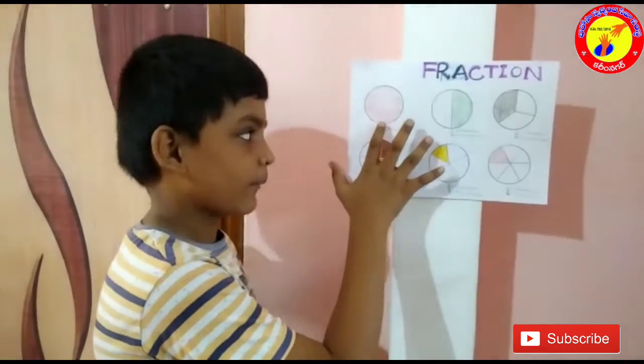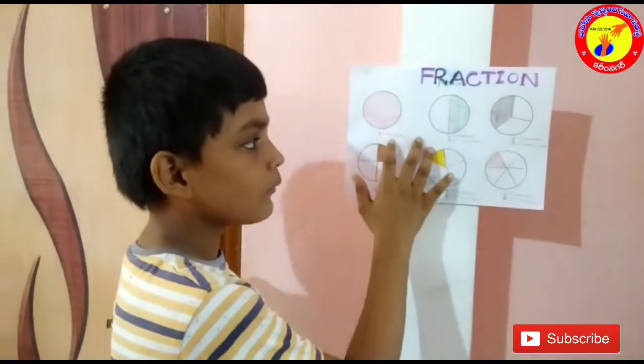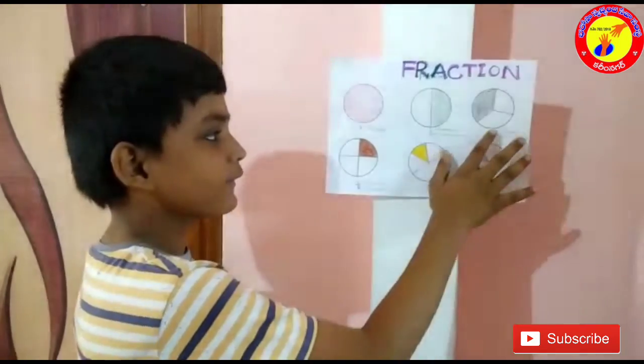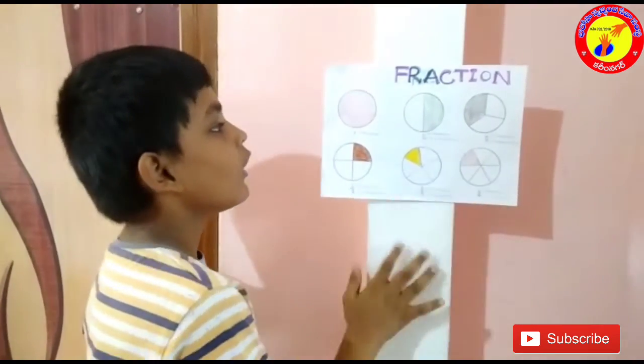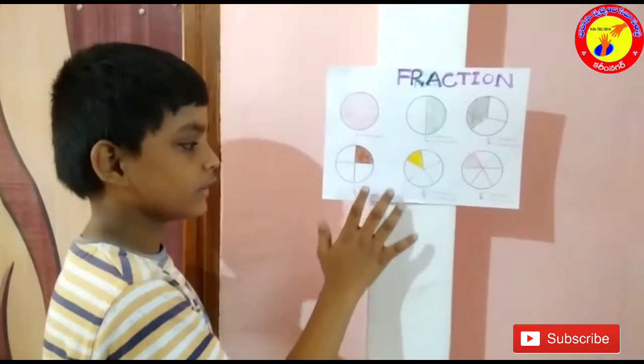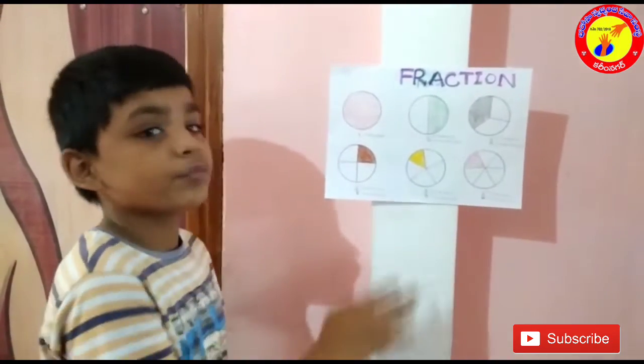Next example. If a whole part is divided into 3 equal parts, it is 1 by 3. If a whole part is divided into 4 equal parts, it is 1 by 4.